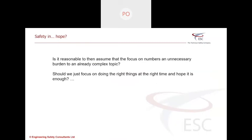Okay, so if the errors are there, regardless of how good we are with our numbers and risk targets in confirming that we meet the target, can we assume that the focus on numbers is just unnecessary? Topic is complex enough. Safety systems are complex enough. Safety risks are complex enough. Should we do the right things at the right time and hope it's enough?